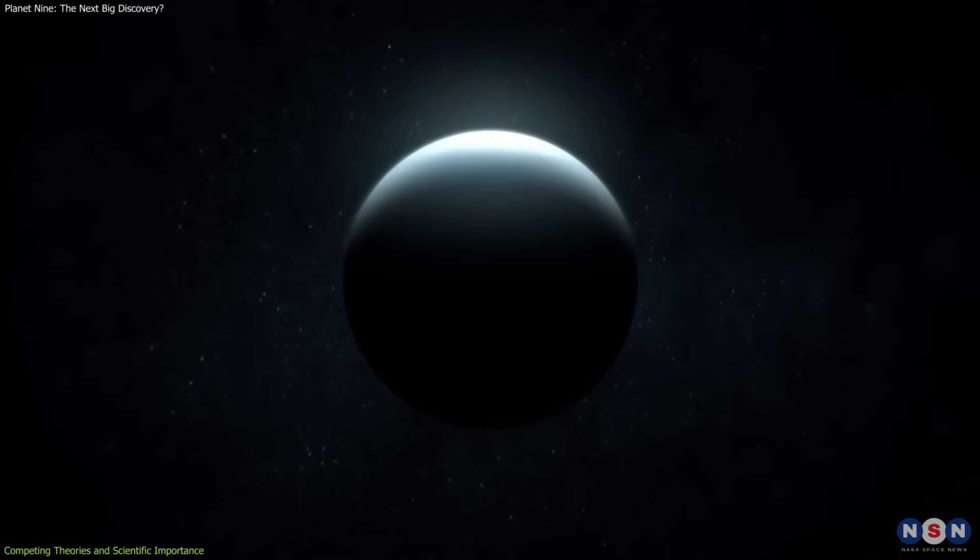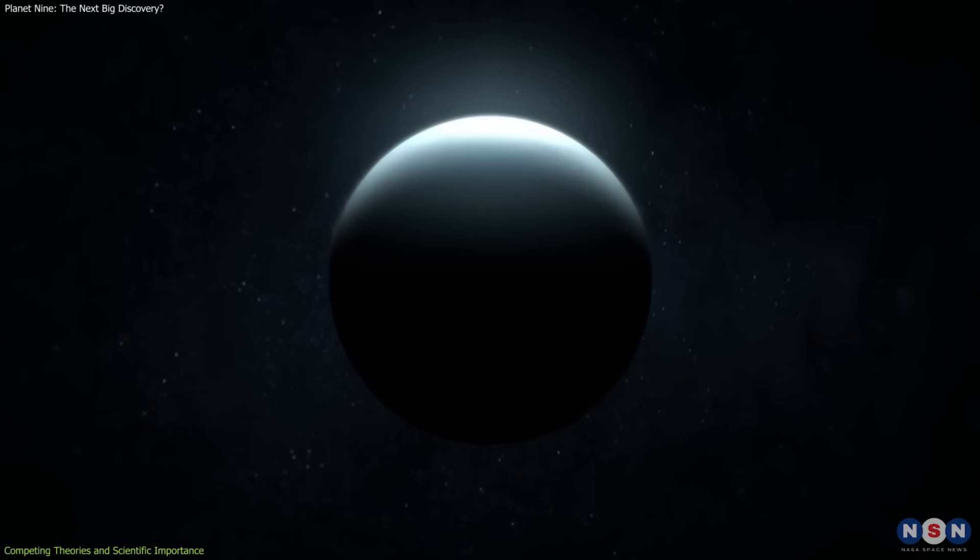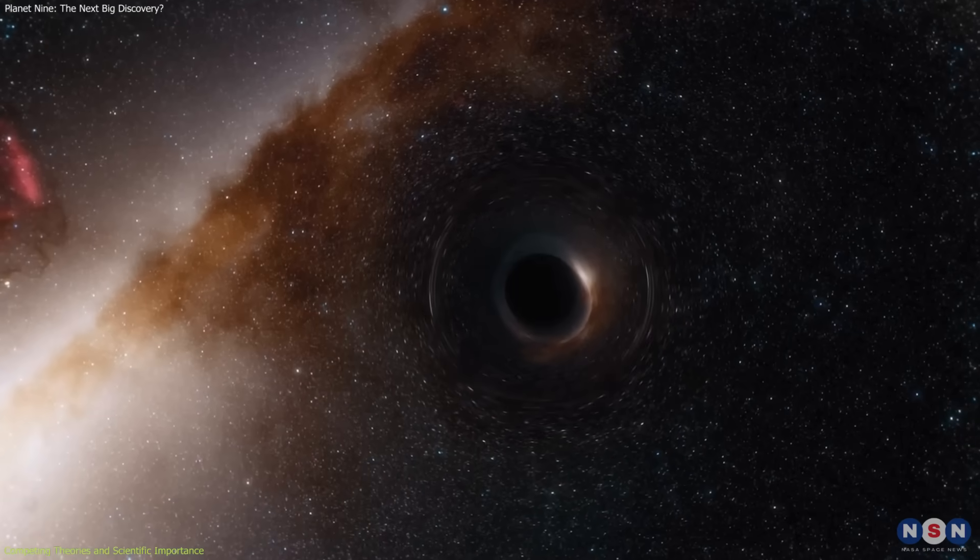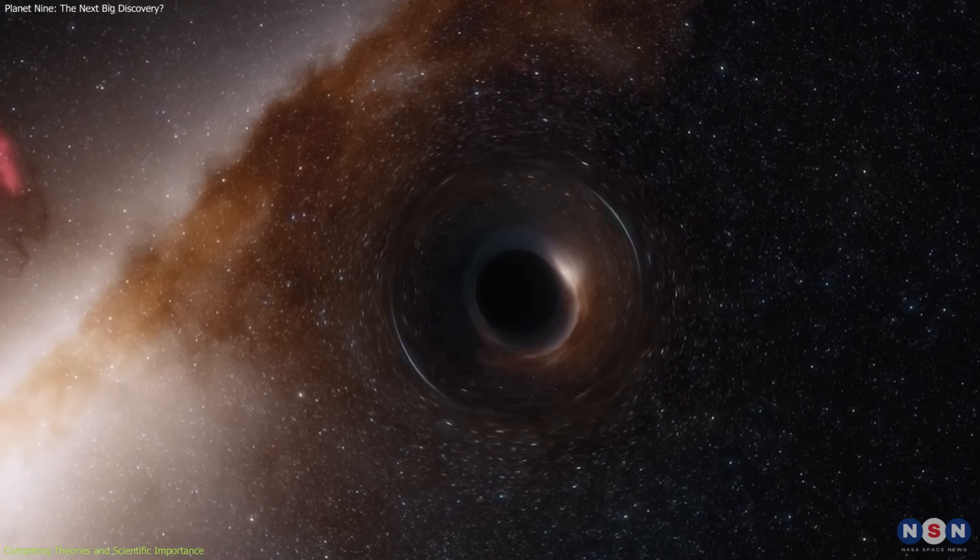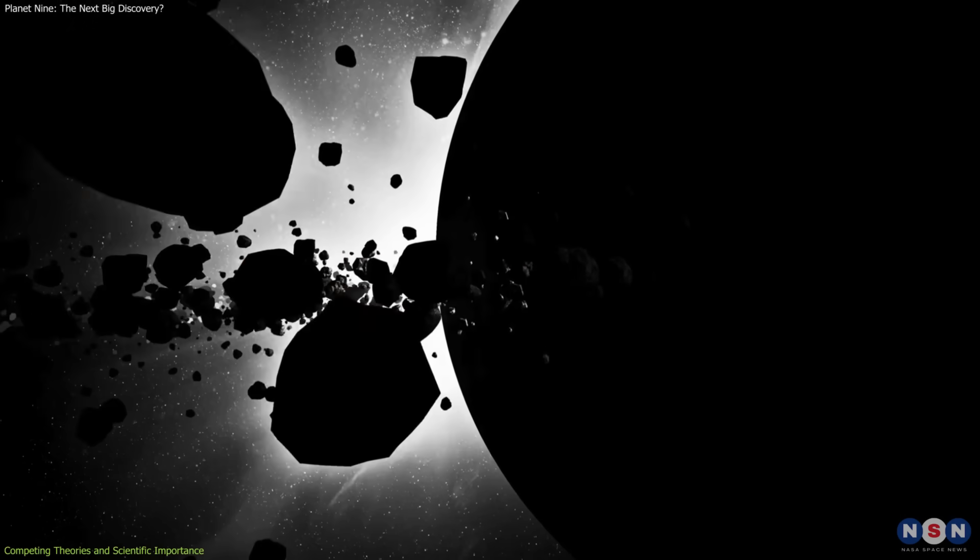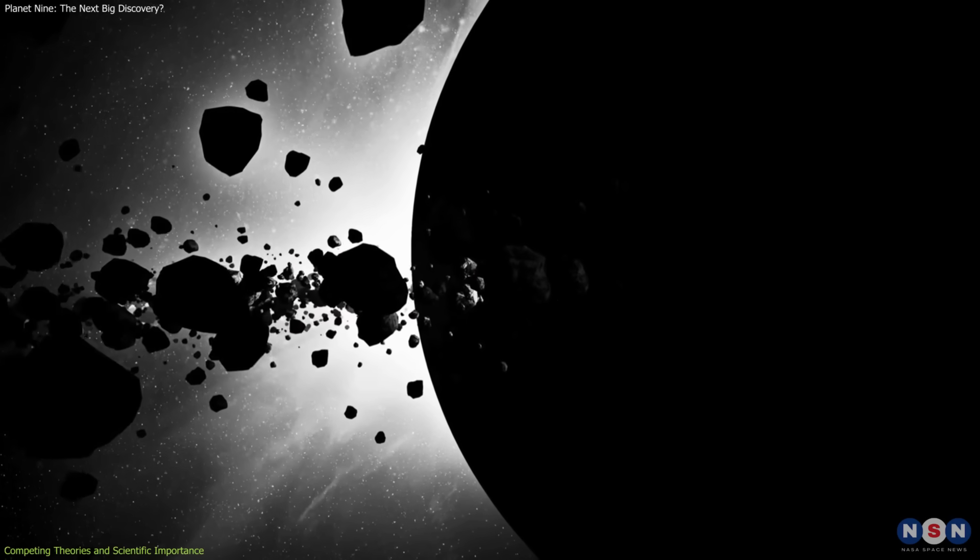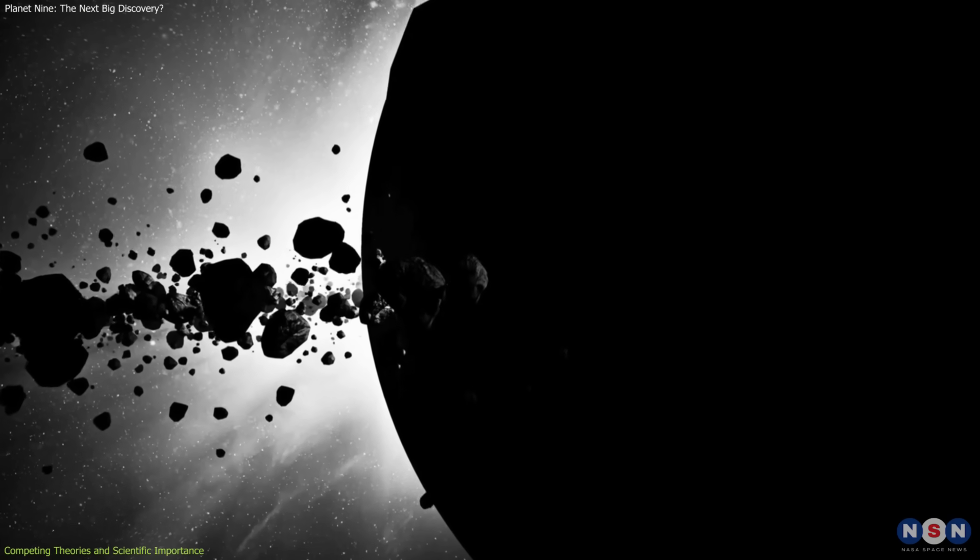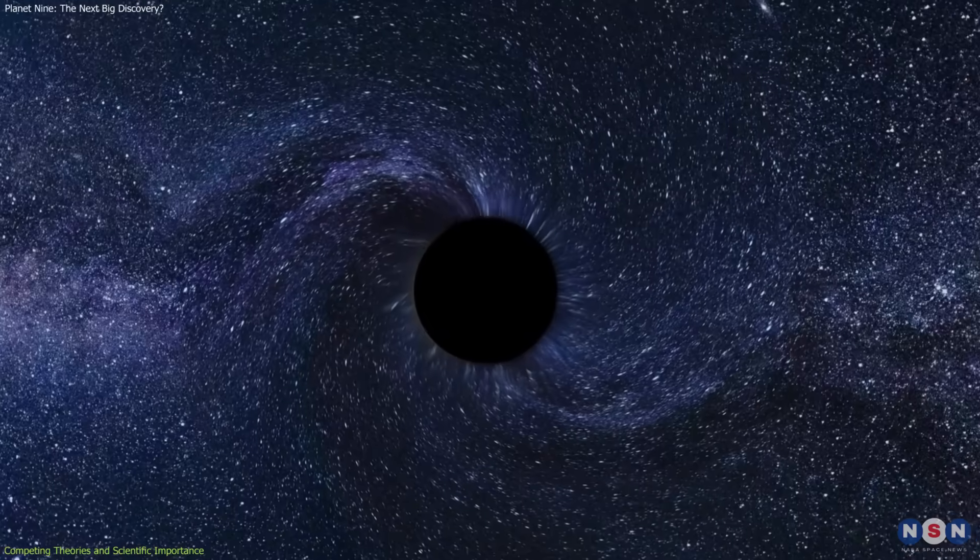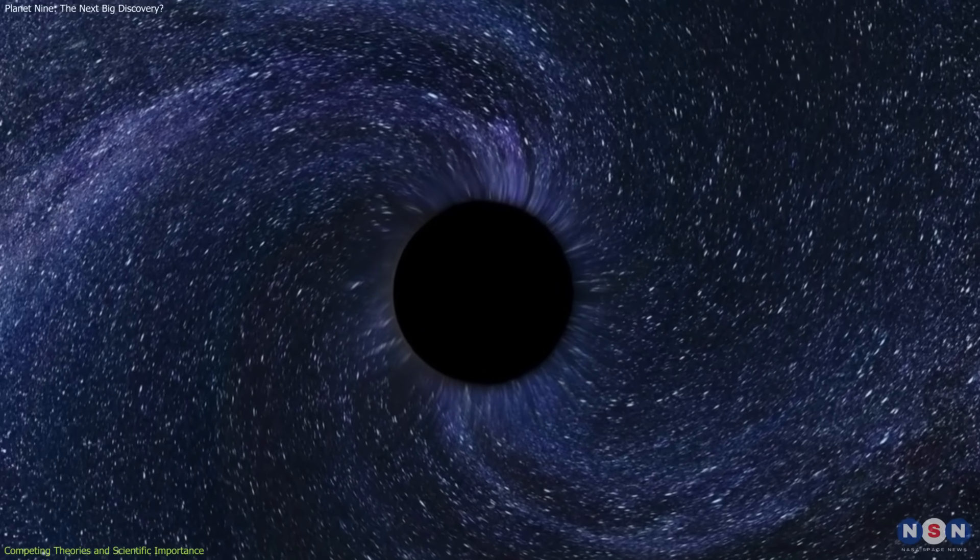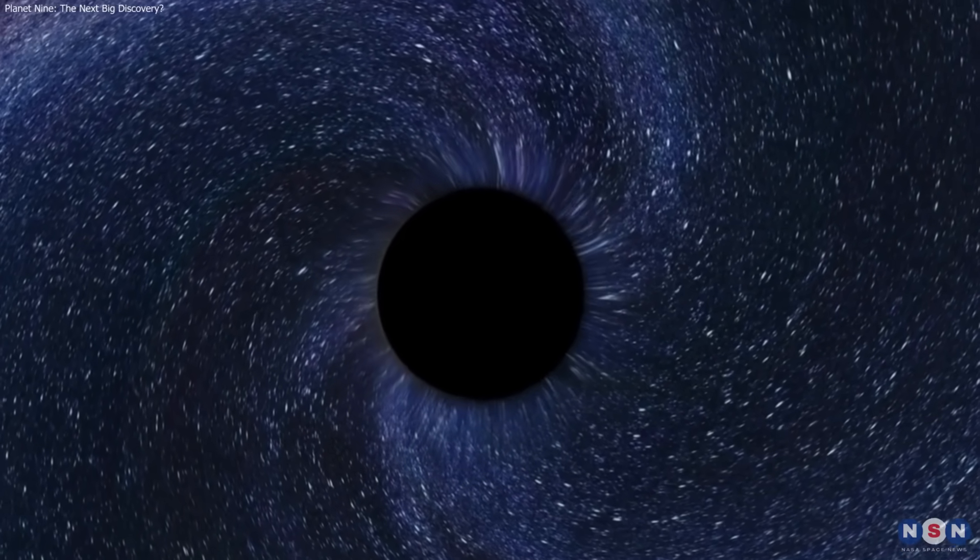Still more speculative is the idea that Planet 9 could be a primordial black hole. Such an object would be no larger than a grapefruit, yet hold several Earth masses. Though almost impossible to detect directly, it would exert the same gravitational pull as a planet. While highly speculative, it illustrates how far researchers are willing to think outside the box to explain the evidence.